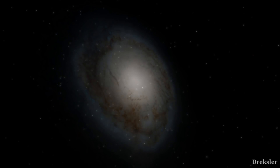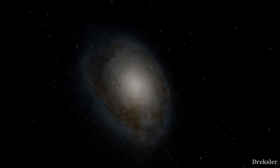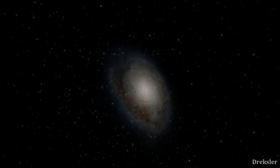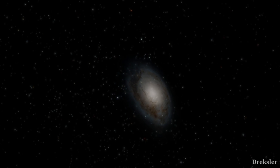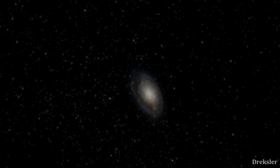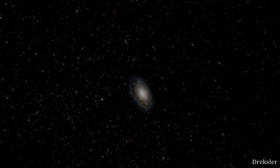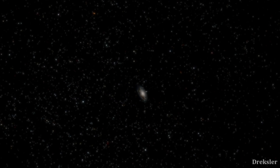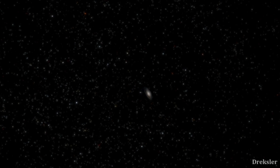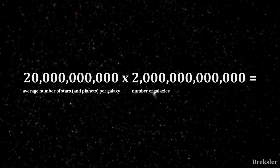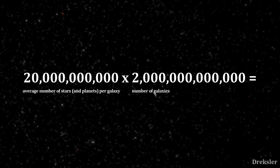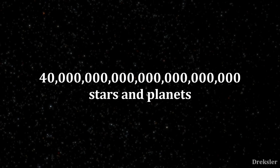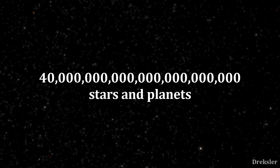In my video titled 'Extraterrestrial Civilizations and Why We Can't Detect Them,' I calculated approximately what the number of planets in the observable universe is. There are 2 trillion galaxies in the observable universe, and the average galaxy roughly has around 20 billion stars. If there is at least a planet per star, which there very likely is, then multiplying the average number of stars per galaxy by the number of galaxies gives us the number of stars and planets — a number with 22 zeros.